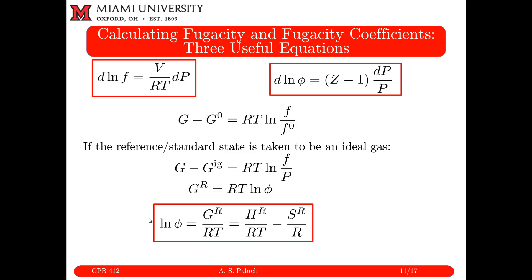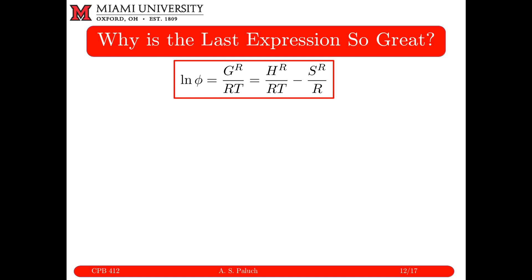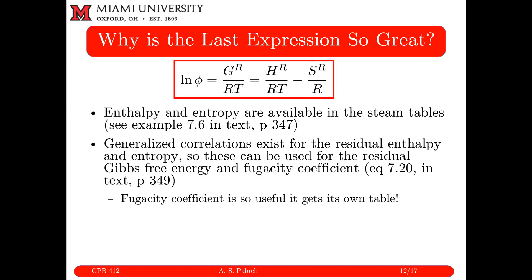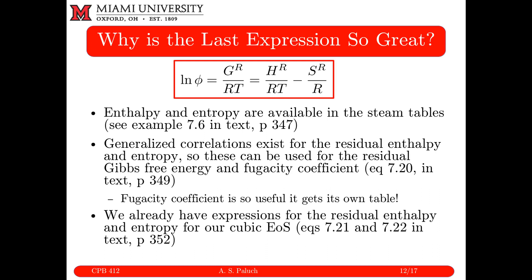For a pure component system, the criteria of phase coexistence is equality of temperatures, pressures, and fugacity coefficients. This gives us a mechanism to predict, say, the temperature at coexistence. Enthalpy and entropy are available in the steam tables, and we have generalized correlations for HR and SR. From Chapter 5, we can also calculate HR and SR using cubic equations of state, giving us nice expressions to calculate log phi.